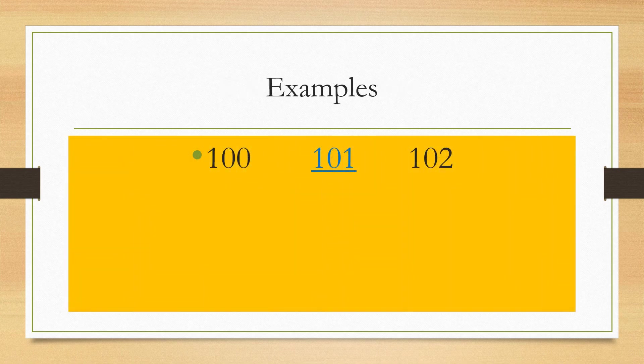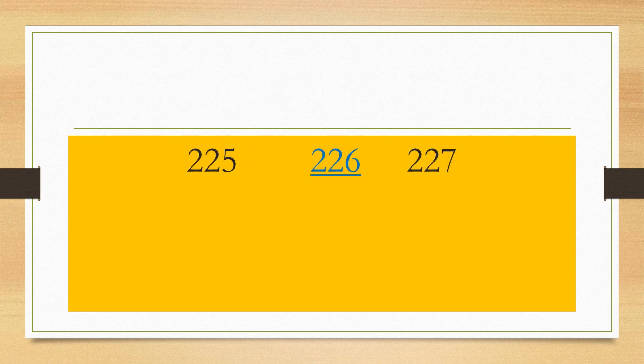Let us have some examples. The number in between 100 and 102 is 101. Now look at the numbers. The number in between 225 and 227 is 226.